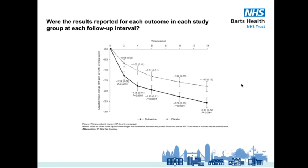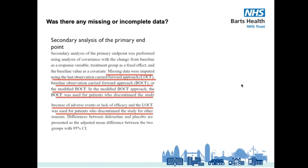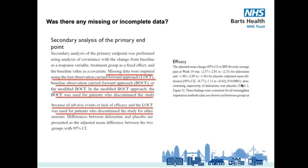The next consideration point asks: was there any missing or incomplete data? This is related to question 3 and intention to treat analysis. When there is no outcome data from a participant because they dropped out, in an intention to treat analysis the authors impute that participant's outcome data. This is common in randomised controlled trials. What you want to see is the authors state how they reacted to such missing data. In our paper, the authors state their approach to missing data and their reasoning on pages 819 and 820 in the supplementary materials. On page 812, they also report that their findings were consistent whichever imputation method was used. So here we can answer yes — this is common and the authors have reported how they dealt with it.